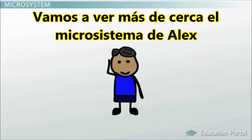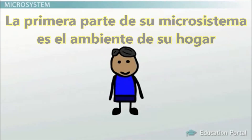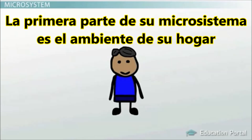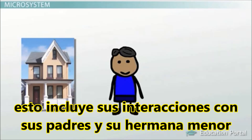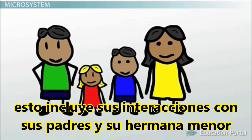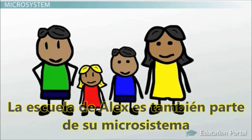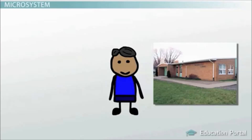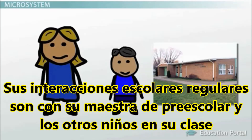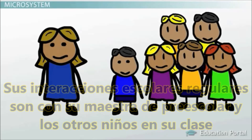Let's look at the Microsystem Alex lives in. The first part of his Microsystem is his home environment, which includes his interaction with his parents and little sister. Alex's school is also a part of his Microsystem, where his regular interactions are with his kindergarten teacher and the other children in his class.